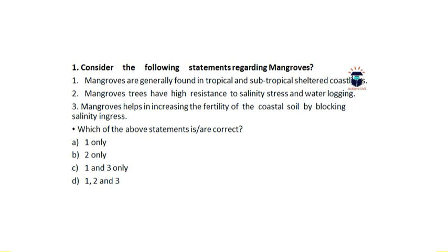The answer is D — that is, all of these statements are correct. Mangroves are basically found in tropical and subtropical regions along the coastlines. They are a kind of ecotone between the freshwater and marine water ecosystems. They have high resistance to salinity and waterlogging. They also help in preventing the ingress of saline water to ensure that the soil and plains remain fertile.